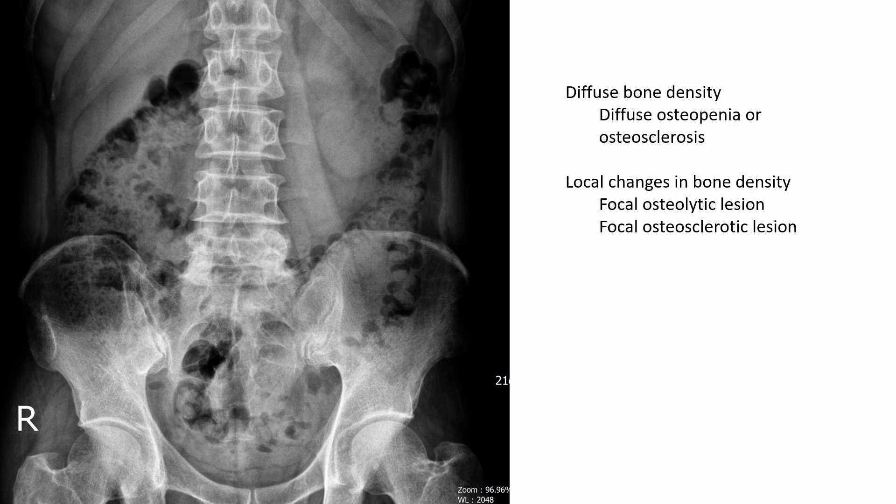The bone density was assessed by examining the diffuse or local bone density of the entire lumbar vertebral bodies, pedicle, sacrum, ilium, and femoral head, looking for any changes in bone density. Notably, there was diffuse osteosclerosis of the L5 vertebral body. However, the subchondral sclerosis appeared normal in other bones.